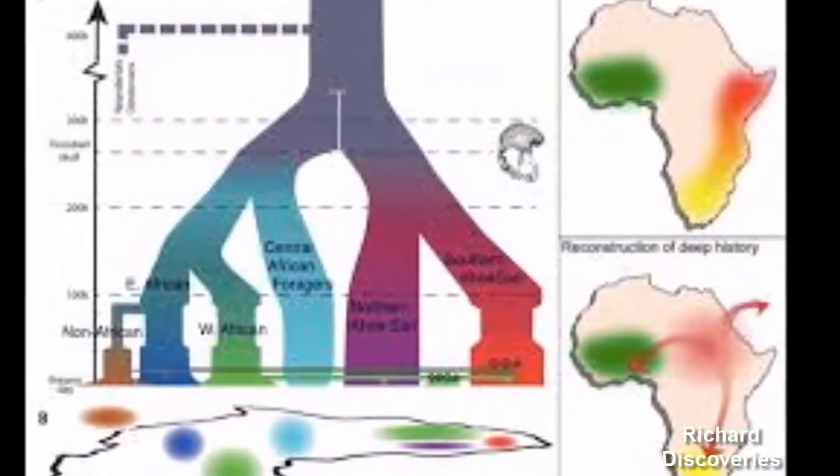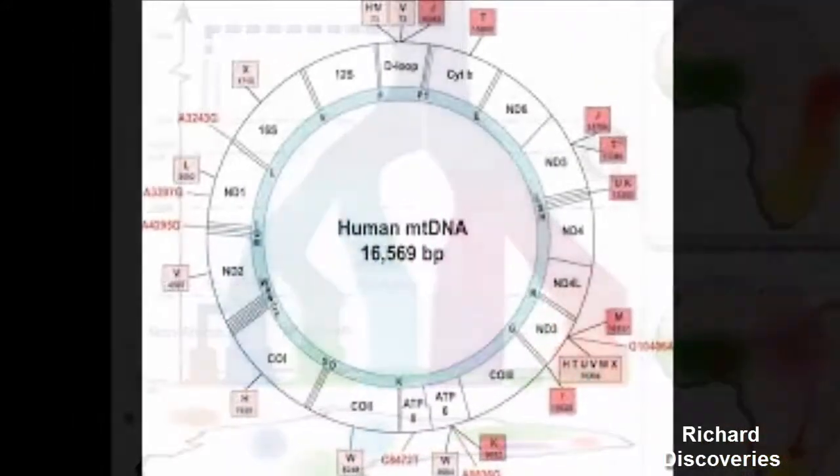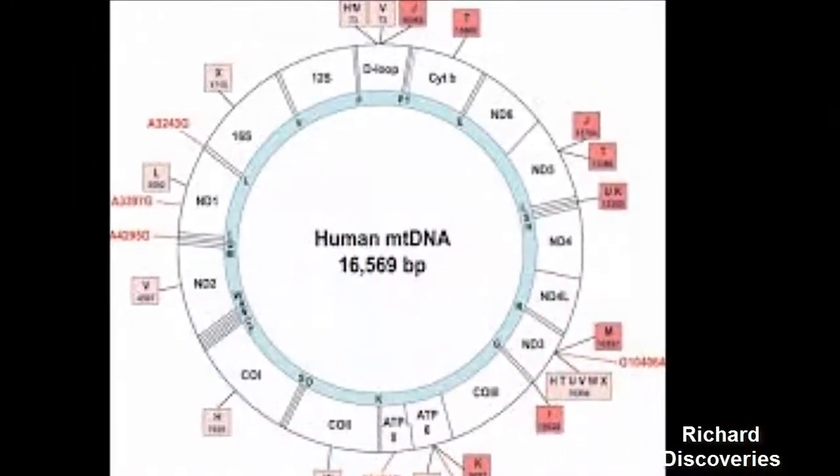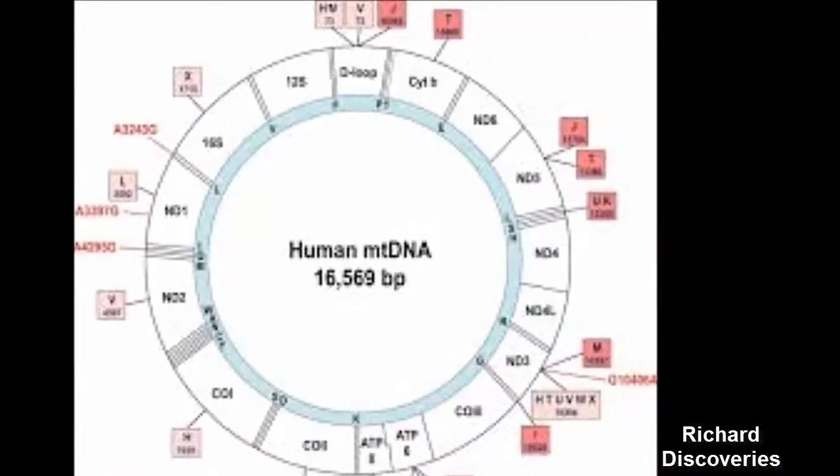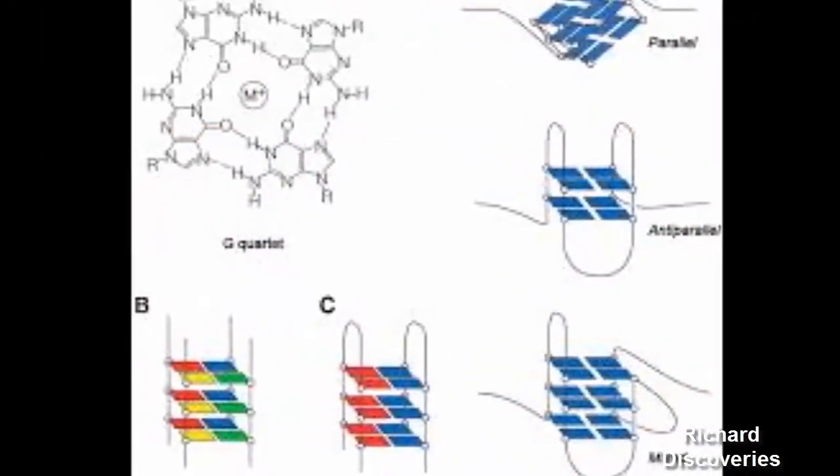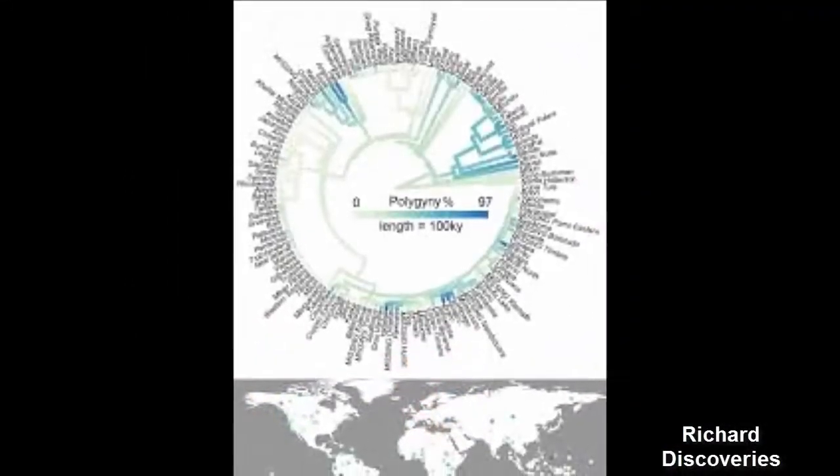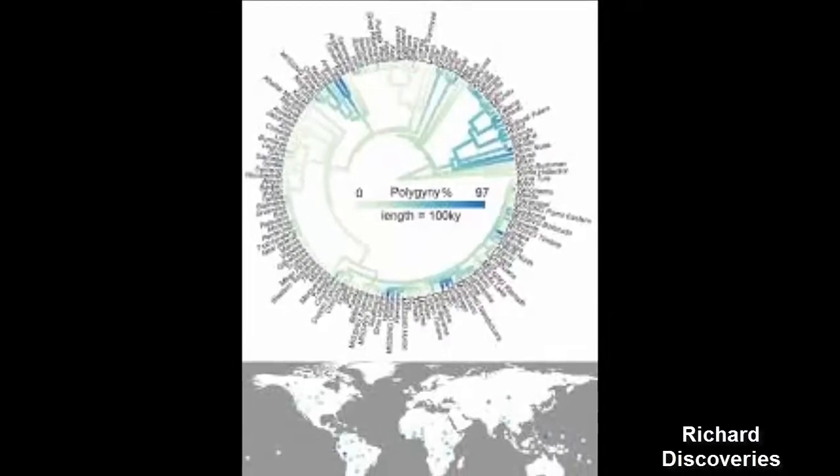Previous estimates for Y-chromosome Adam ranged from between 50,000 to 115,000 years ago. Despite the Adam and Eve monikers, which evoke a single couple whose children peopled the world, it is unlikely that mitochondrial Eve and Y-chromosome Adam were exact contemporaries.